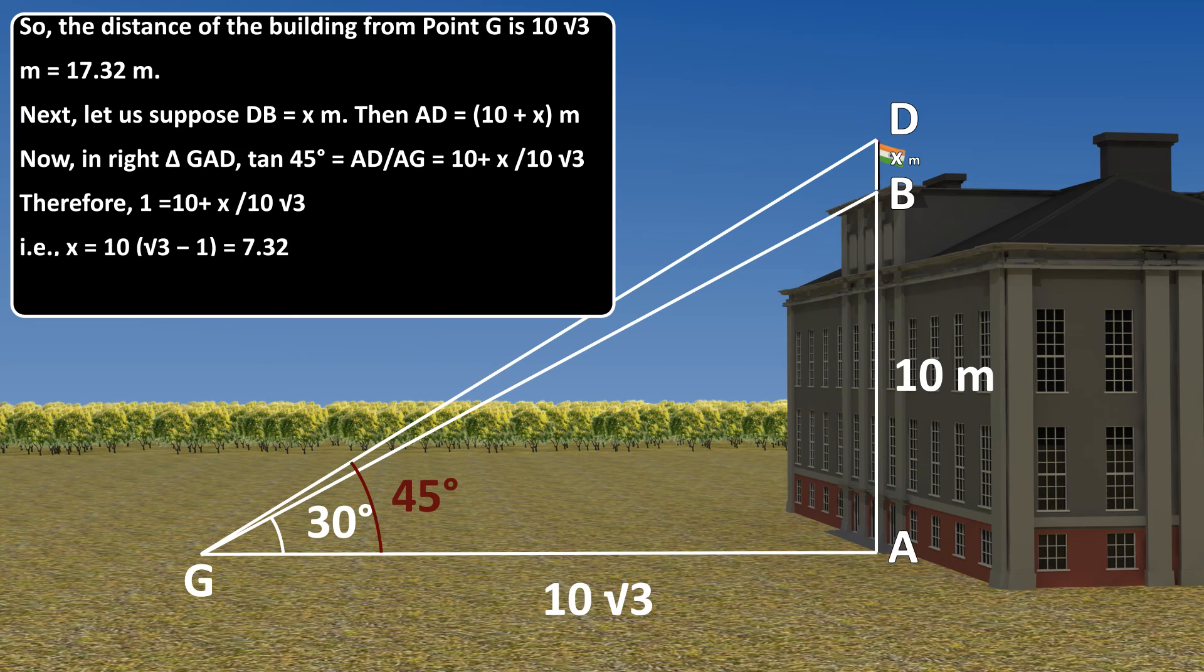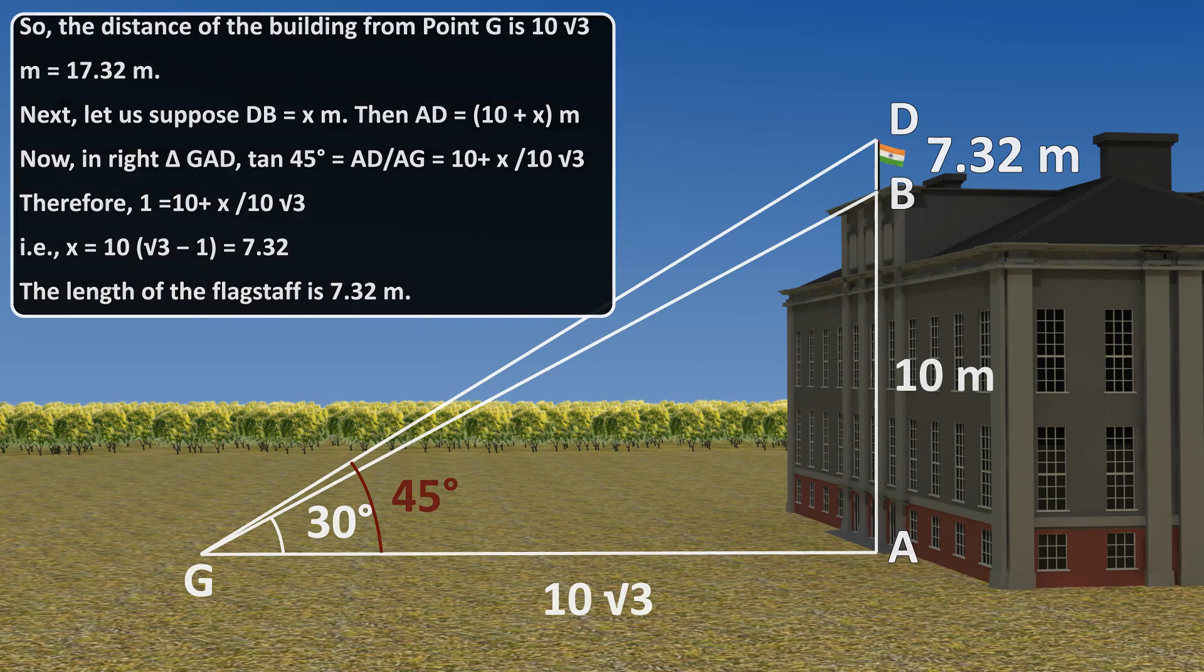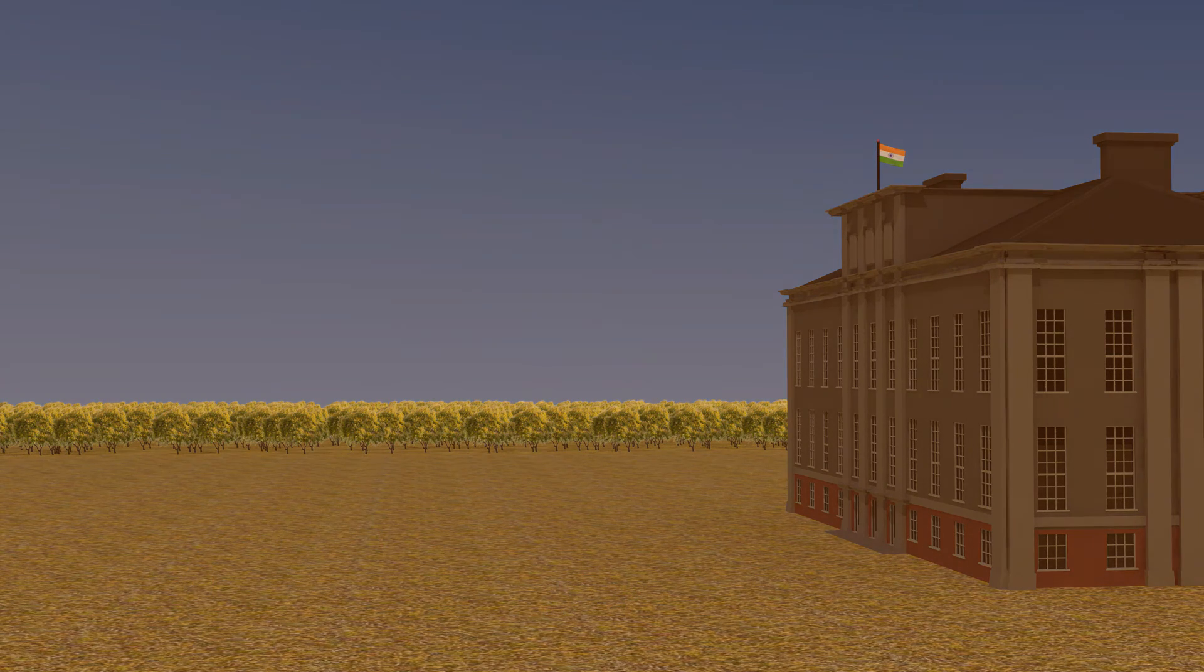That is X is equal to 10 into square root 3 minus 1 which is equal to 7.32. So, the length of the flag staff is 7.32 meters. The length of the flag is 18.32 meters.